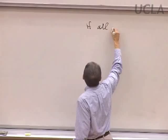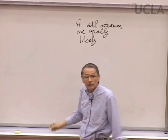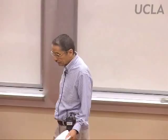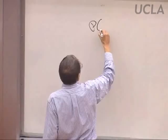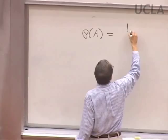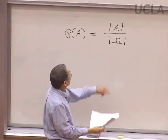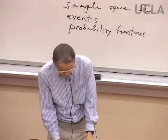In the case where all the outcomes are equally likely — because we're flipping a fair coin, or rolling fair dice, or we've really figured out how to choose someone at random — the probability of an event A, where A is a set of outcomes, can be found just by counting: the absolute value of A, the size of set A, the number of outcomes in it, divided by the size of the sample space.